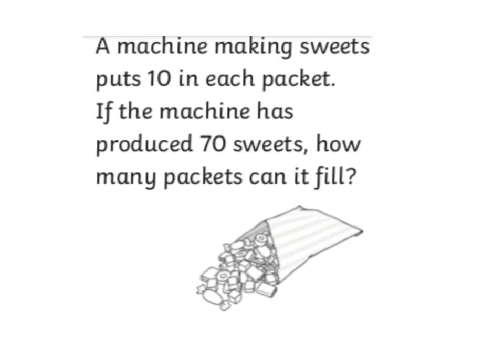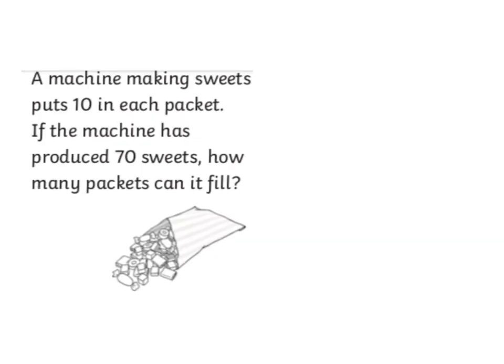This problem says, a machine making sweets puts 10 in each packet. If the machine has produced 70 sweets, how many packets can it fill? This problem is going to require me to share the 70 sweets into the 10 packets. Because I'm sharing, I know it's going to be a division problem. So this problem is asking me to go 70 sweets divided amongst 10 packets equals how many in each packet. Today, you're going to write some word problems as equations to show your understanding.